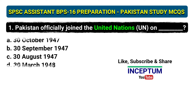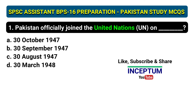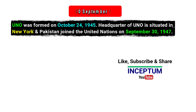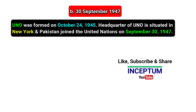Question 1: Pakistan officially joined the United Nations on — options: 30th October 1947, 30th September 1947, 30th August 1947, 30th March 1948. The correct answer is option B, 30th September 1947. UNO was formed on October 24, 1945. The headquarters of UNO is situated in New York, and Pakistan joined the United Nations on 30th September 1947.